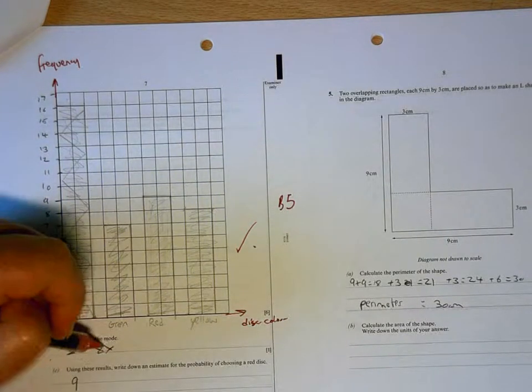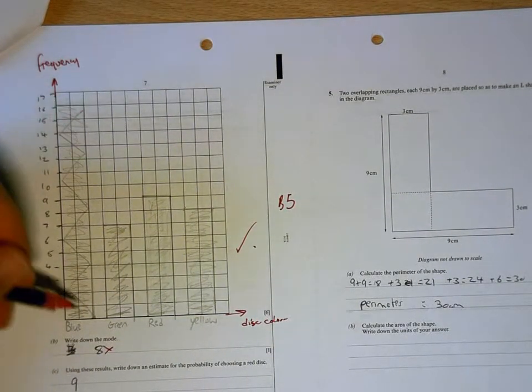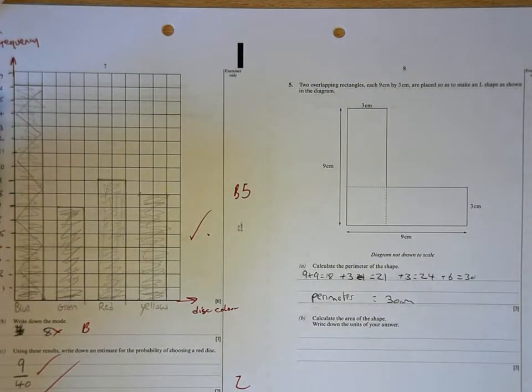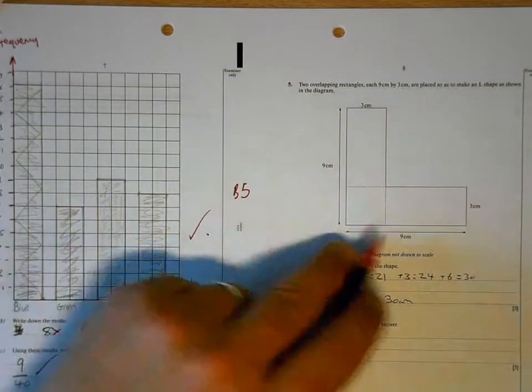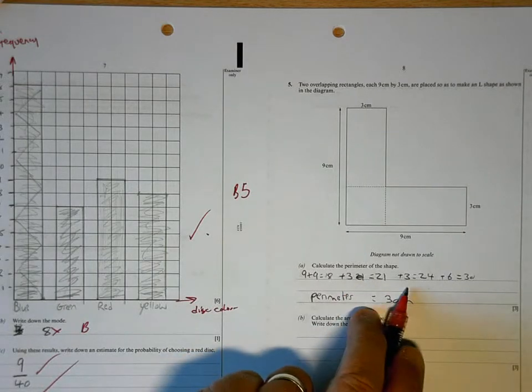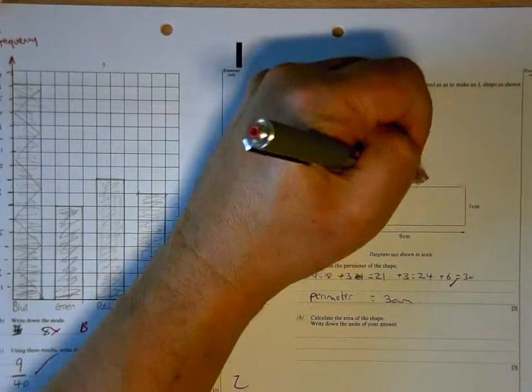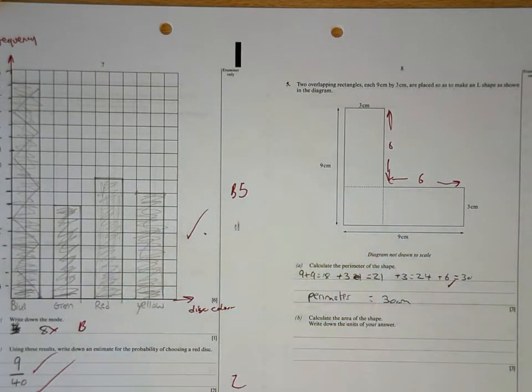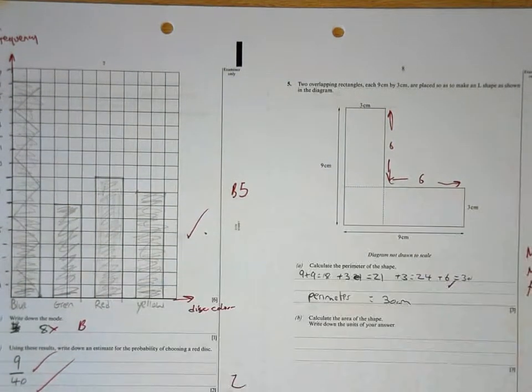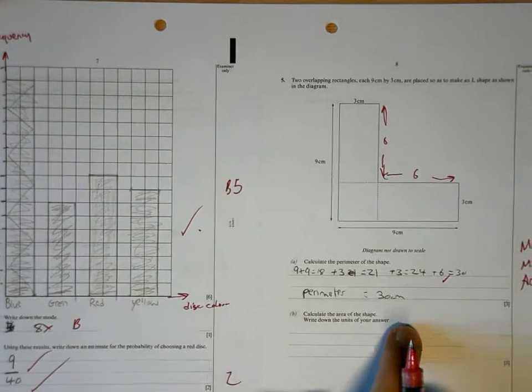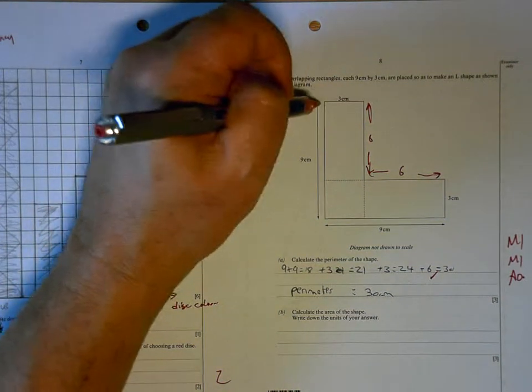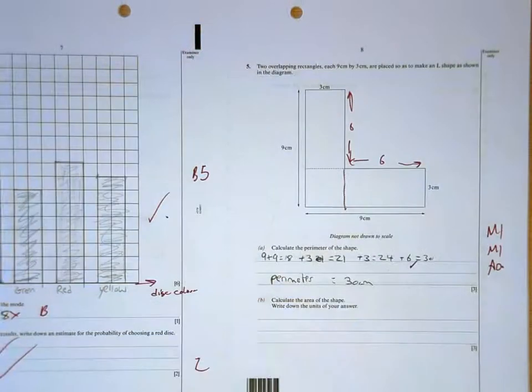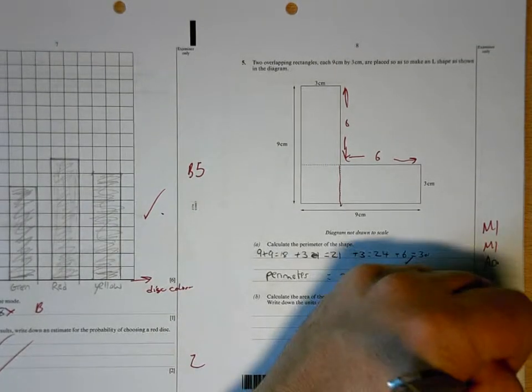The mode is not 8. The mode is what happens more than anything else, which is blue, which happens 16 times. That's good for that. The perimeter is not 30. So you've got 9 and 9, and 3 and 3, and 6. So I'm seeing 6, but there are two 6s. There's that one and that one. You've only added one of them. So you are going to get one mark for finding the 6, one mark for adding them together, but you lose your answer mark. You should be able to do that. All you're doing is working out the area of two rectangles. That rectangle there is going to be 3 times 9. And then this smaller rectangle is going to be 3 times 6 and add them together. And then give me the units. 7, 9 for the page.